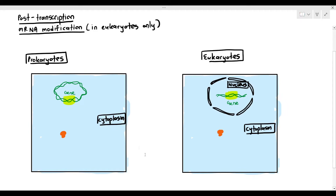For prokaryotes, the ribosome is in the cytoplasm. For eukaryotes, the ribosomes are also in the cytoplasm or on the surface of the rough endoplasmic reticulum. The point is that prokaryotes have the DNA and ribosomes in the same area, which is the cytoplasm. But for eukaryotes, the DNA is within the nucleus but the ribosome is in the cytoplasm — there is a separation.